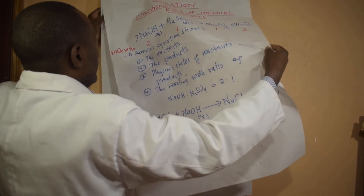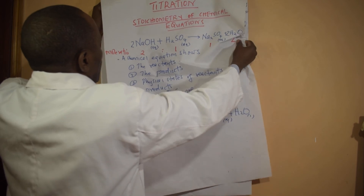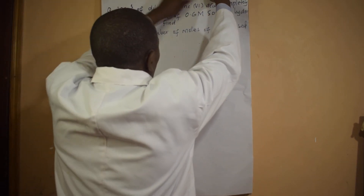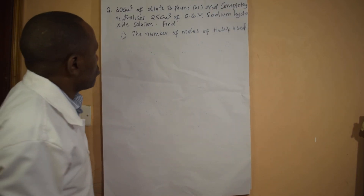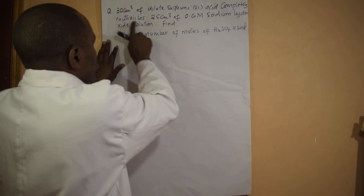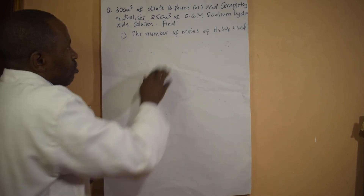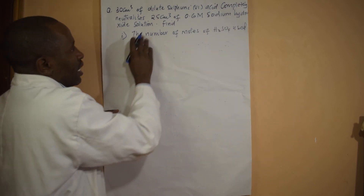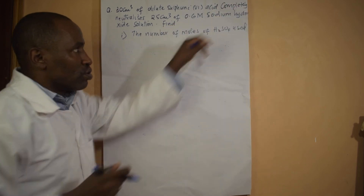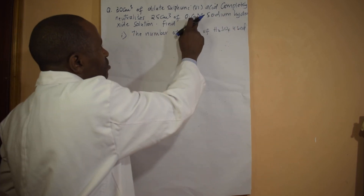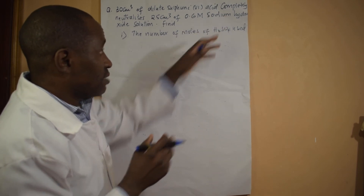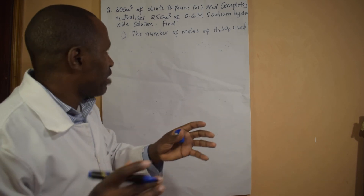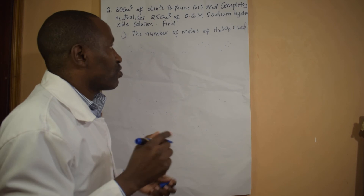Now let's look at an application of this using an equation. You are given this question: dilute sulfuric acid completely neutralizes 25 cm³ of 0.6 molar sodium hydroxide solution. Find the number of moles of sulfuric acid used. I have been given information about sodium hydroxide — I know the molarity and the volume, so I can get the moles. If I can write an equation between sodium hydroxide and sulfuric acid, that will give me the mole ratio, and I can use that ratio to find the moles of sulfuric acid.